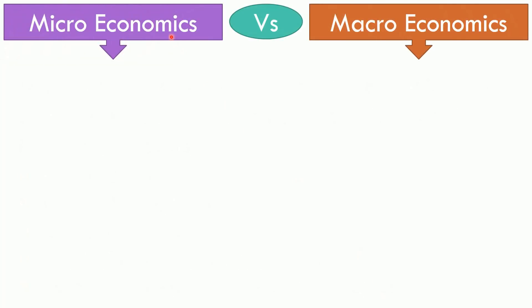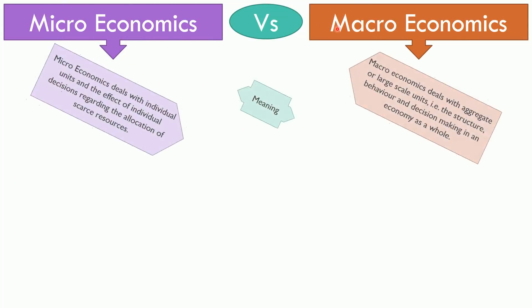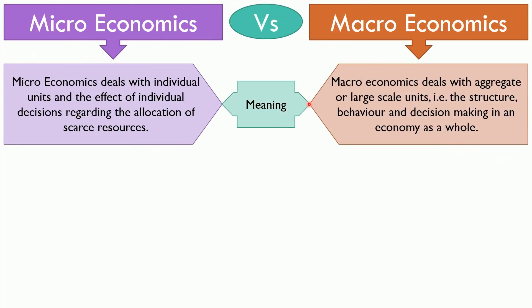Now the difference between Micro and Macroeconomics in terms of meaning: Microeconomics deals with individual units and the effect of individual decisions regarding the allocation of scarce resources. On the other hand, macroeconomics deals with aggregate or large scale units, i.e. the structure, behavior and decision making in an economy as a whole.